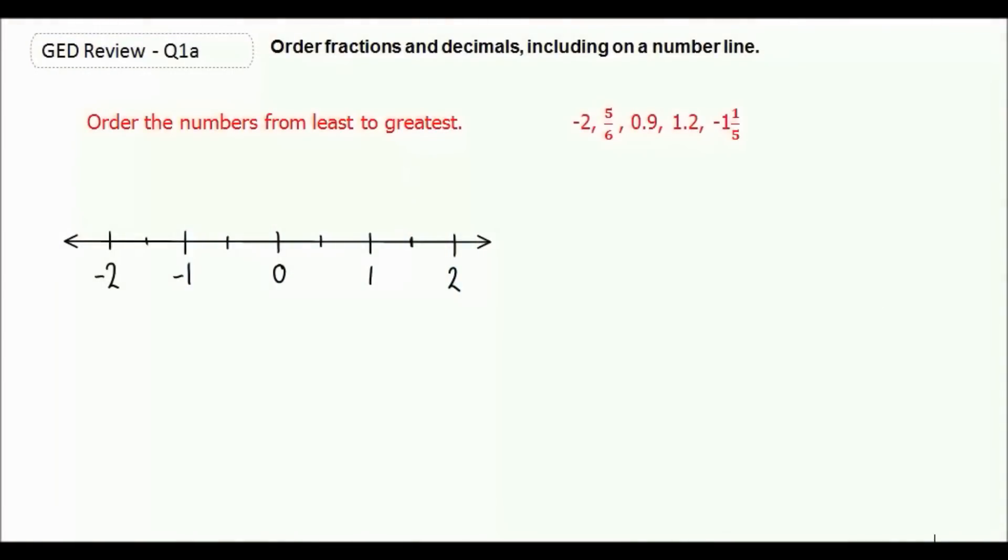The first thing we're going to do is order numbers from least to greatest on a number line. We're ordering negative 2, 5/6, 0.9, 1.2, and negative 1 and 1/5.